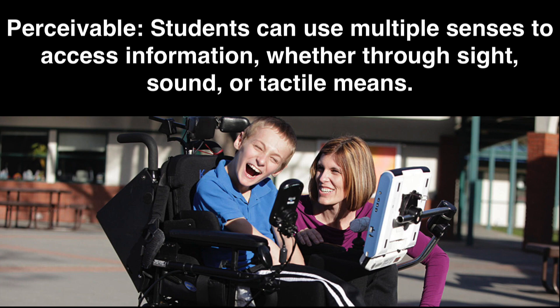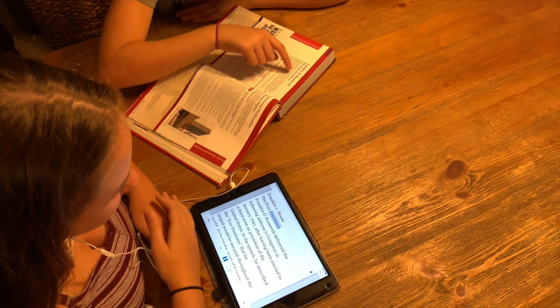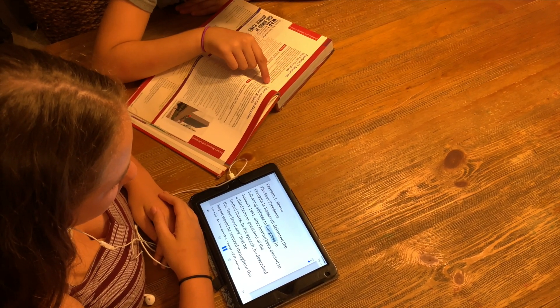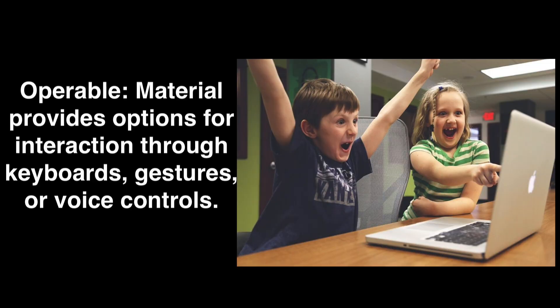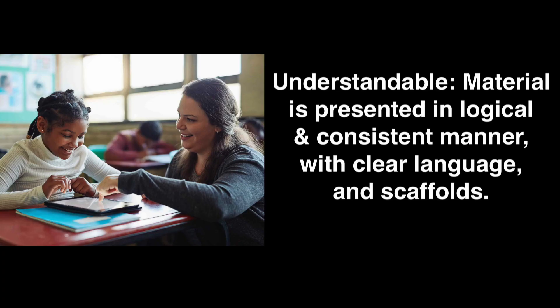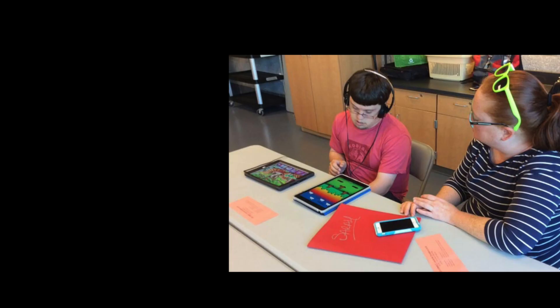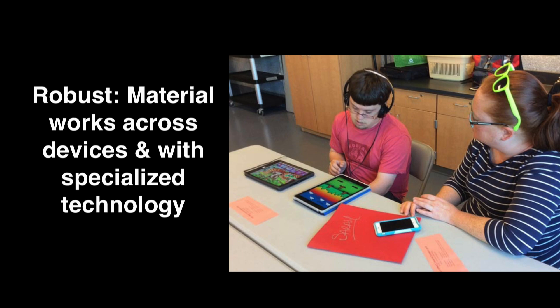Perceivable means that students can use multiple senses to access the information, whether through sight, sound, or tactile means. Examples include digital books that students can customize by adjusting the display, activating text-to-speech, or converting to digital braille. Operable means the material provides options for students to interact with it, whether through keyboard, screen gestures, or voice control. Understandable means the material is presented in a logical and consistent manner, in language the student can understand, and with scaffolds for learning. Robust means the material works across different devices and web browsers, and has been tested for accessibility.